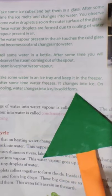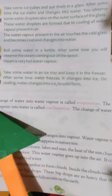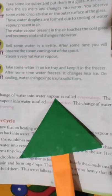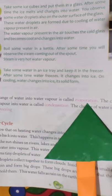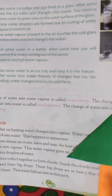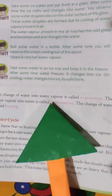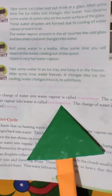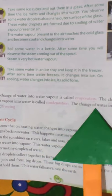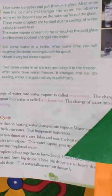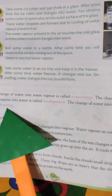The change of water into water vapor is called evaporation. The change of water vapor into water is called condensation. The change of water into ice is called freezing.